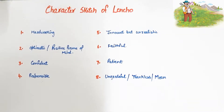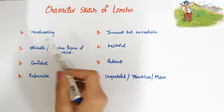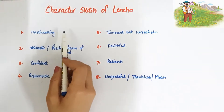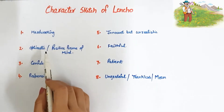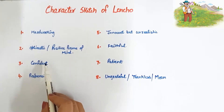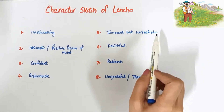Relax your mind and listen to this video carefully. To start a character sketch, think about Lencho's character in the story step by step — think about Lencho's qualities and then make some points. For example, he was hard working, optimistic (positive person), confident, innocent but unrealistic, and ungrateful — a very thankless person. We need to write both positive and negative points.